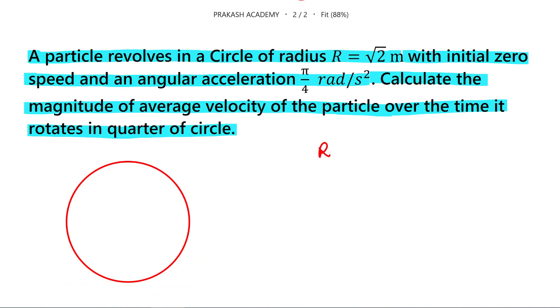So what are the things that is given? Radius is given, which equals root 2 meter. And the question says it has an angular acceleration alpha, which equals pi by 4 radian per second square.